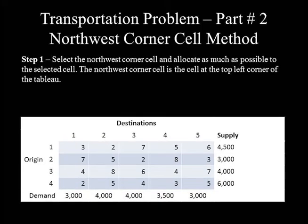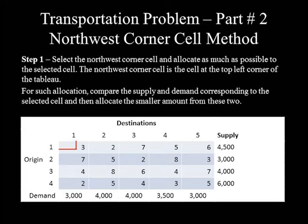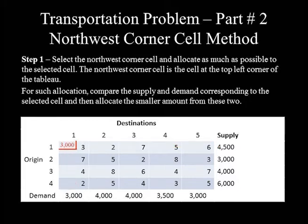Step 1: Select the northwest corner cell and allocate as much flow as possible to it. The northwest corner cell is at the top left corner of the table — the intersection of row 1 and column 1. To determine the allocation, compare the supply and demand corresponding to this cell and allocate the smaller amount. Supply is 4,500 and demand is 3,000. Since 3,000 is less than 4,500, we allocate 3,000 to this cell. Then proceed to Step 2.